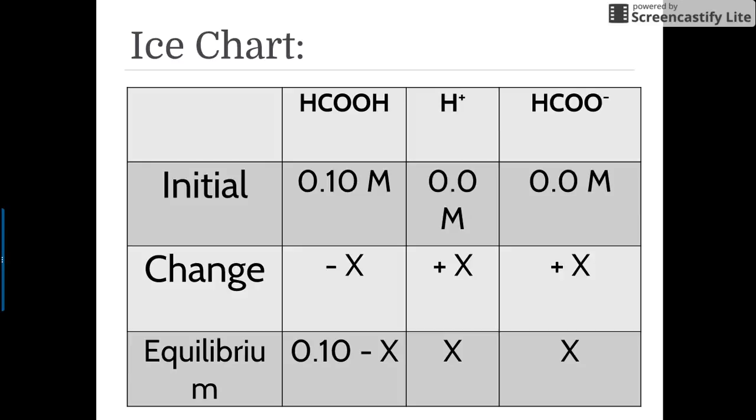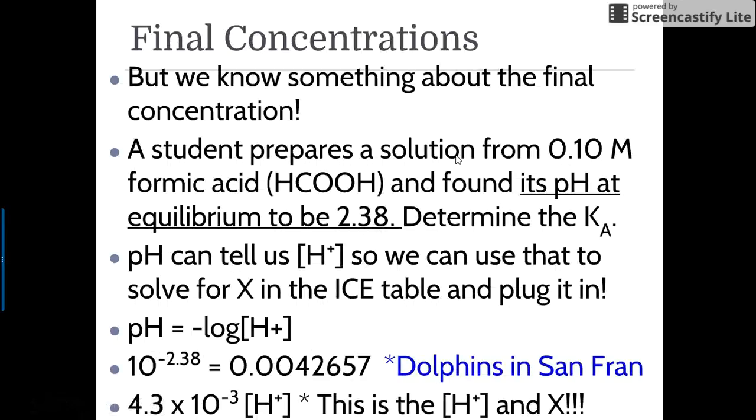the concentration of X is going to be the concentration of H+. See that? X is H+. We have enough information to solve for the concentration of H+, therefore X, because we know the pH. If we take 10 to the negative pH, we're given the concentration of H+. If you don't know how to do that, it's because you copied answers from the internet yesterday.